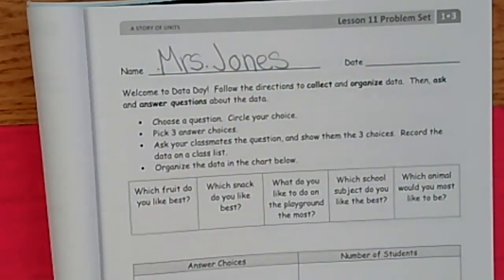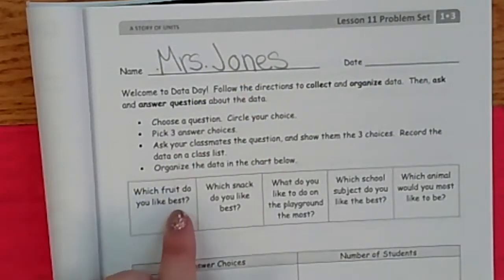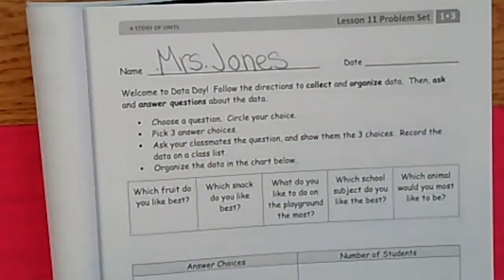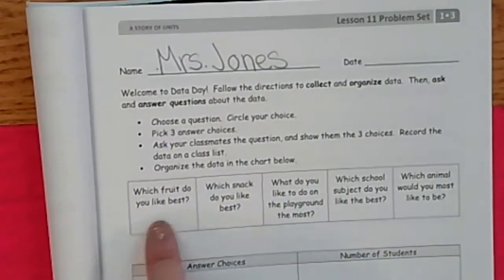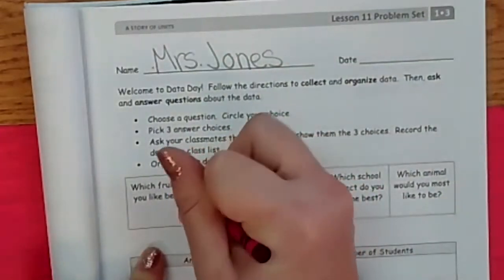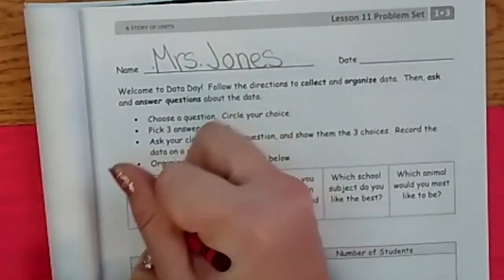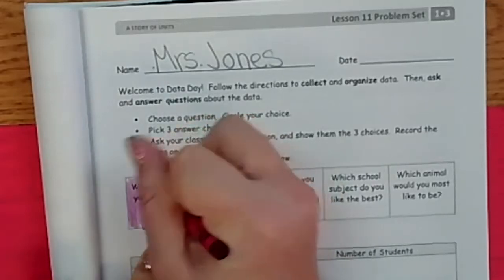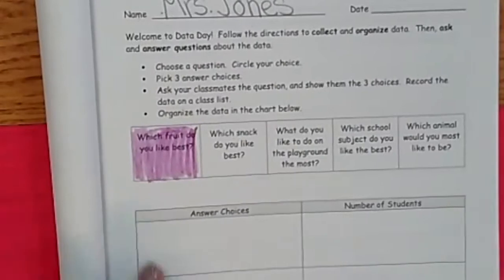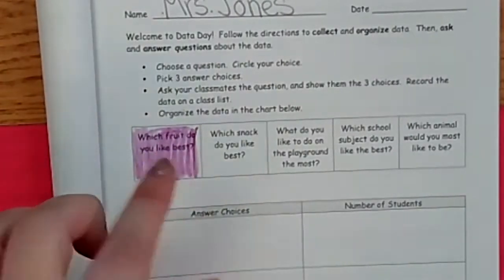So what did I ask my friends? I said, which fruit do you like best? So here's what I want you to do. With one of your favorite color crayons or any color crayon, color the question that we did. There were a lot of questions, but I picked the fruit question. It says which snack, playground, school, animal, but I went with fruit. So color the fruit question. That's where I collected data to graph with you today. And I asked the primary, the teachers in my hallway, which fruit do they like best?